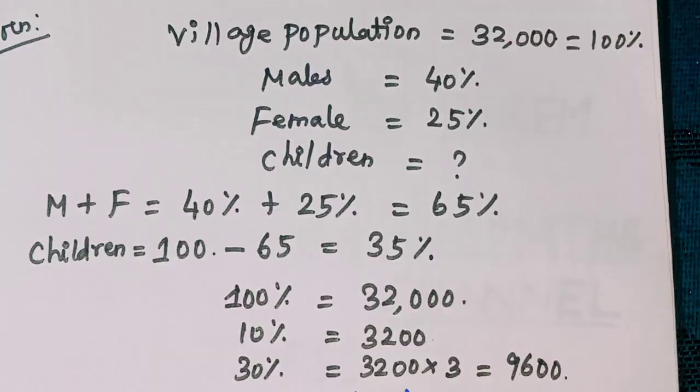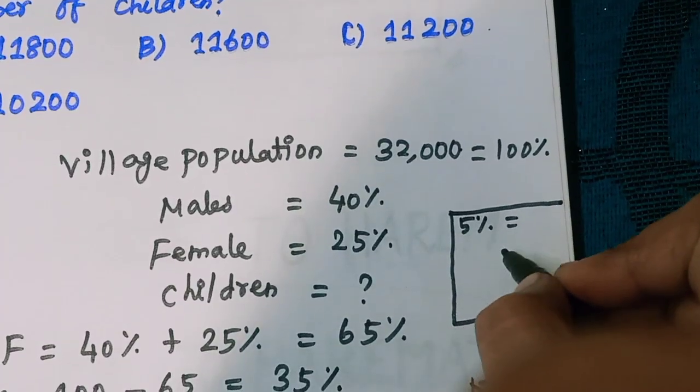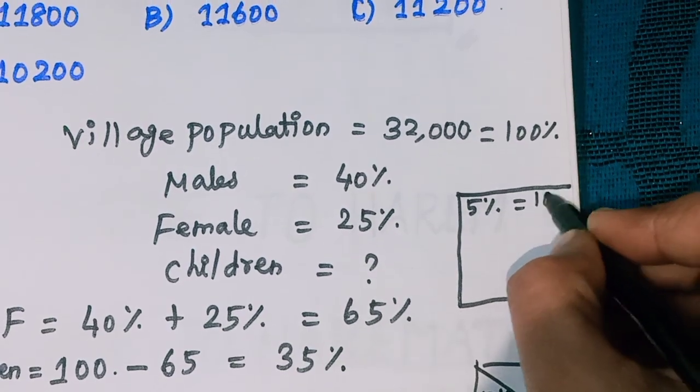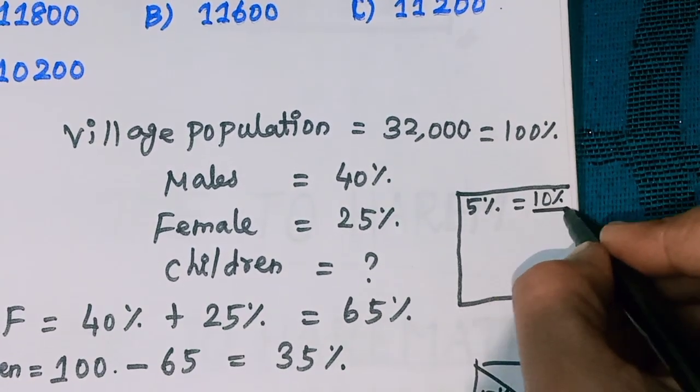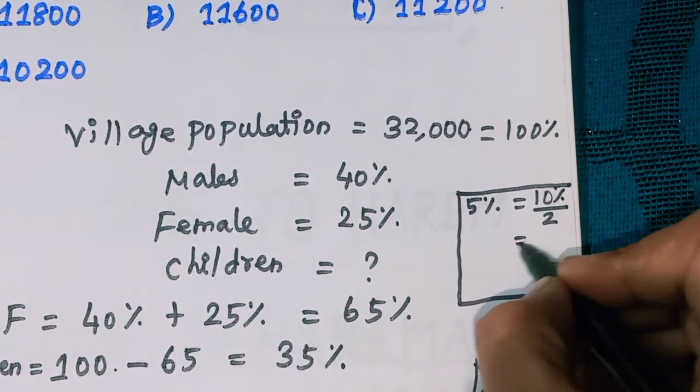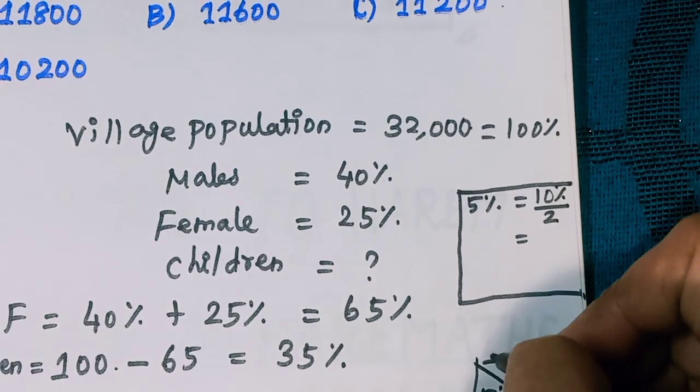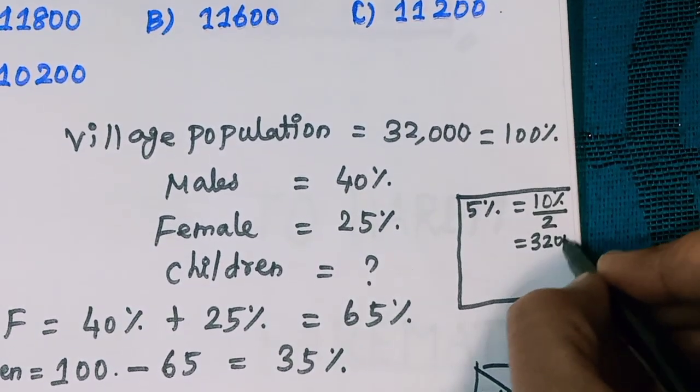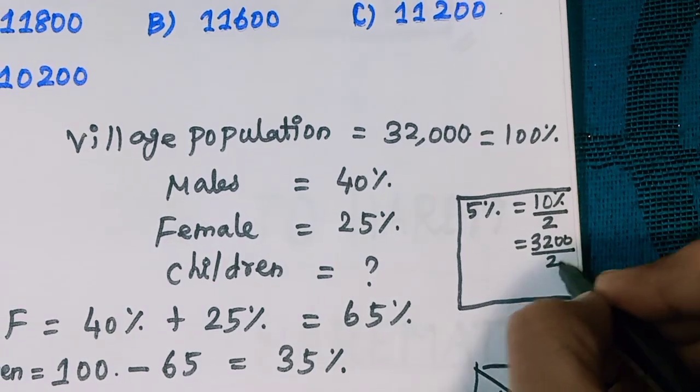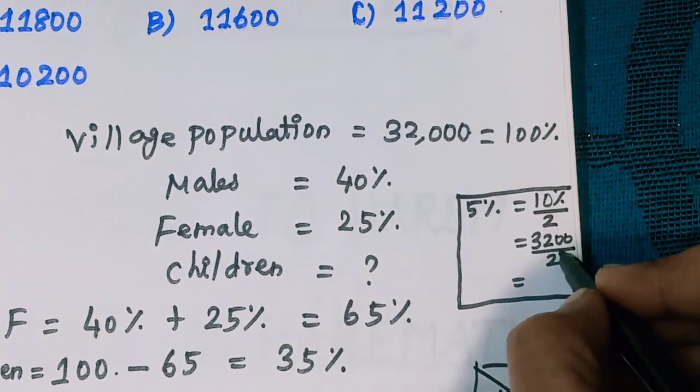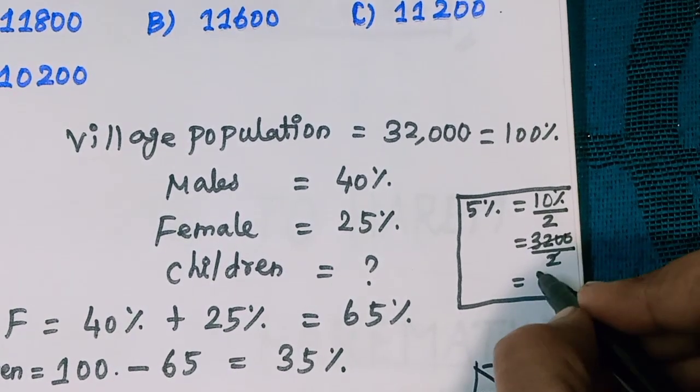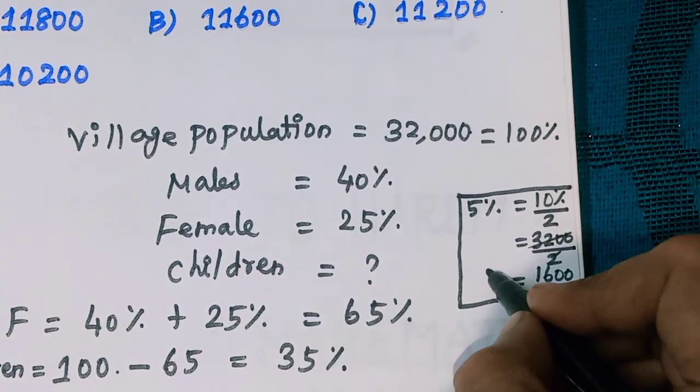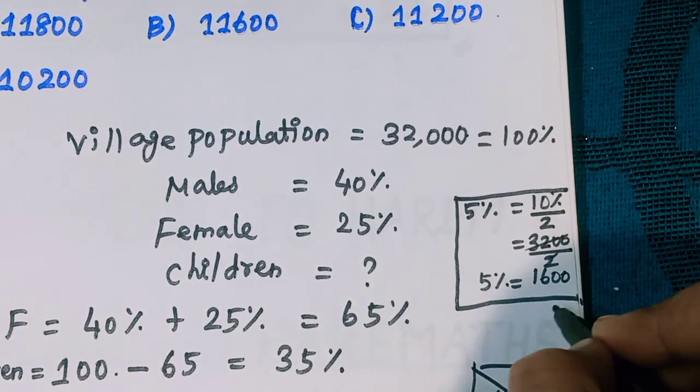10% divided by 2. So 10% is 3,200 divided by 2 equals 1,600. So 5% equal to 1,600.